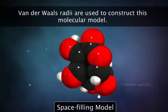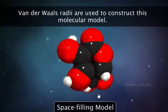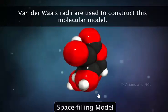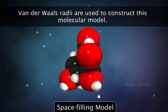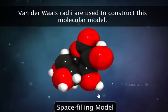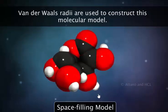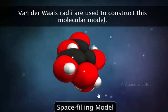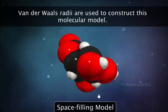Van der Waals radii are used to construct a special kind of molecular model called a space filling model. These models are constructed by drawing each atom as a Van der Waals sphere with the atom's nucleus at the center of the sphere.